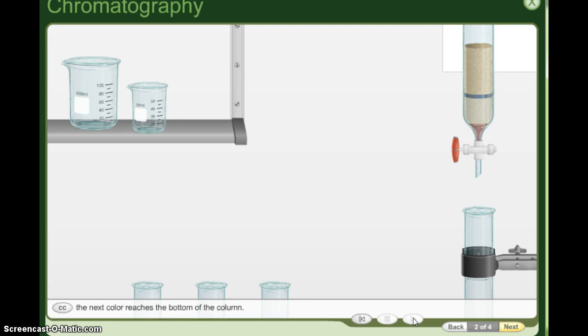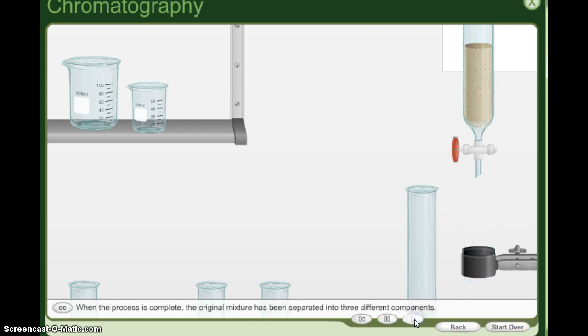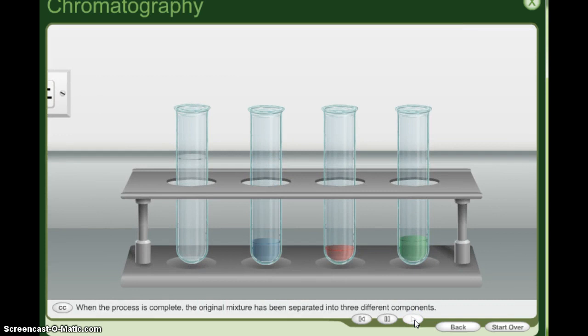So the way that we did it was we just separated and said, okay, the black ink is made out of green, red, and blue ink, but here they're actually collecting the different dyes. So it's kind of a more advanced way of doing chromatography. And so again, they're collecting the water in between the two colors because they just want the pure colors.